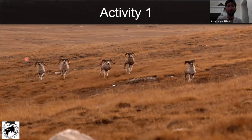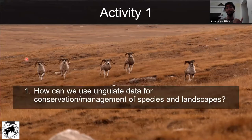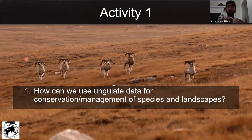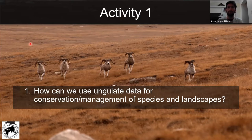What better way to start than an activity? I'll ask people in their chat box to give potential answers to the following question: How do you think we can use ungulate data or research on ungulates to do conservation and management — both of the species themselves and of landscapes? What are potential ways to do that? Have a think about what we've learned in the first three classes and type in the chat.